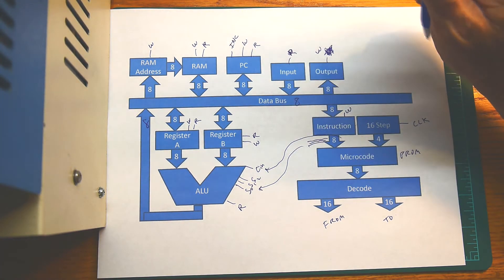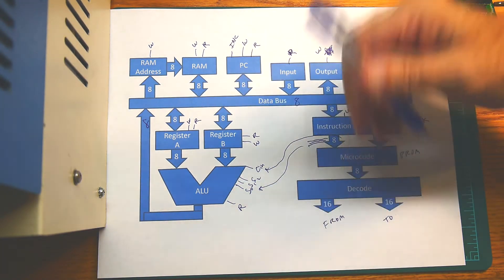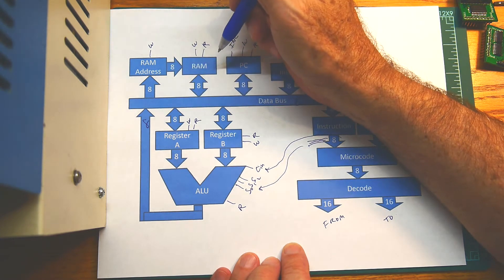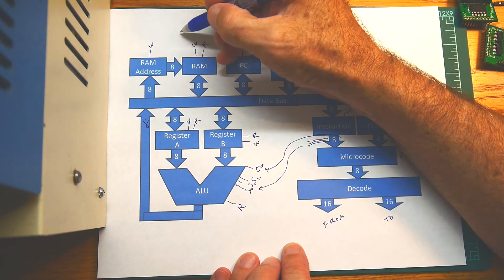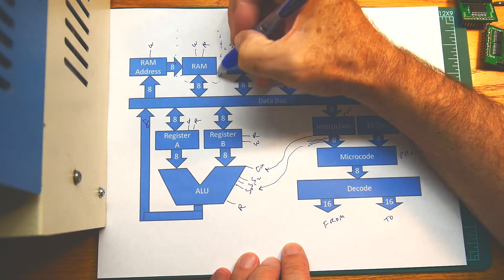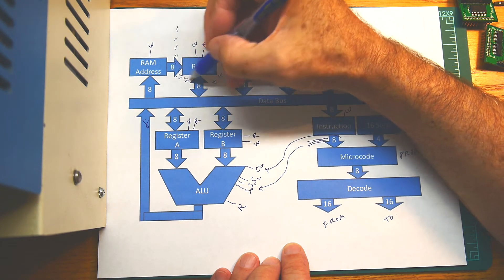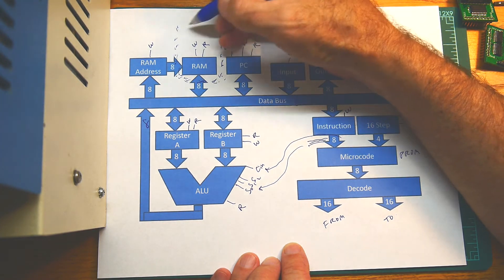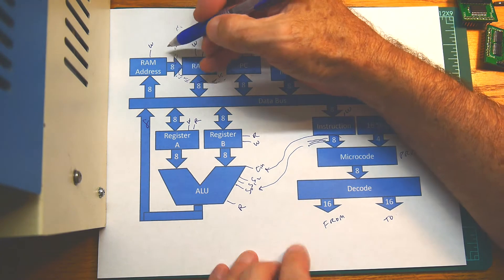And so this is a CPU. The RAM, technically this is not part of the CPU. The RAM addressing would be, but this would be external. Usually there's an address bus and a data bus that come off of a microprocessor.